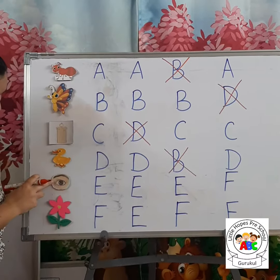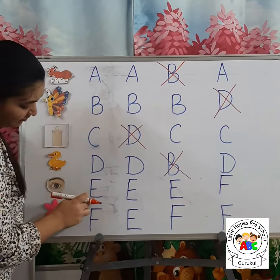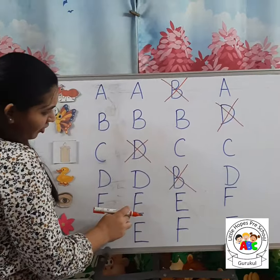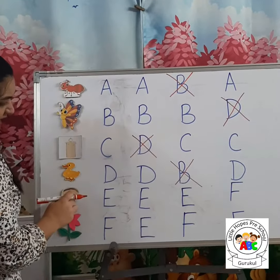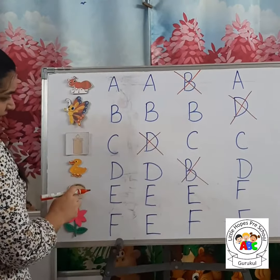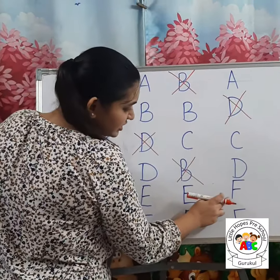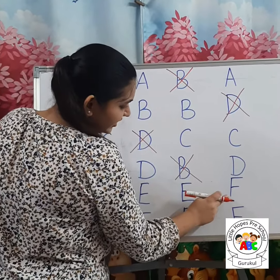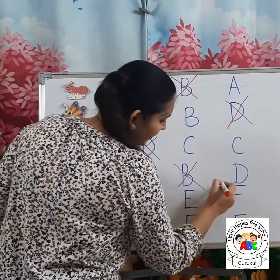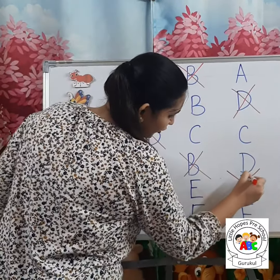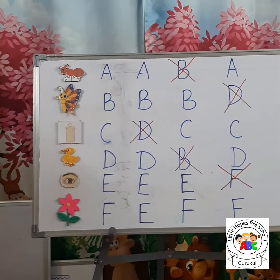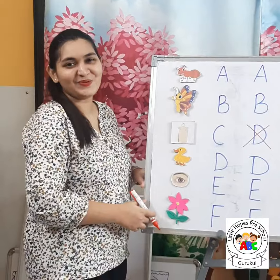This is Ice. E for Ice. See, this is not letter E — this is letter F. So we are going to put a cross on letter F. Let's go to the last one.